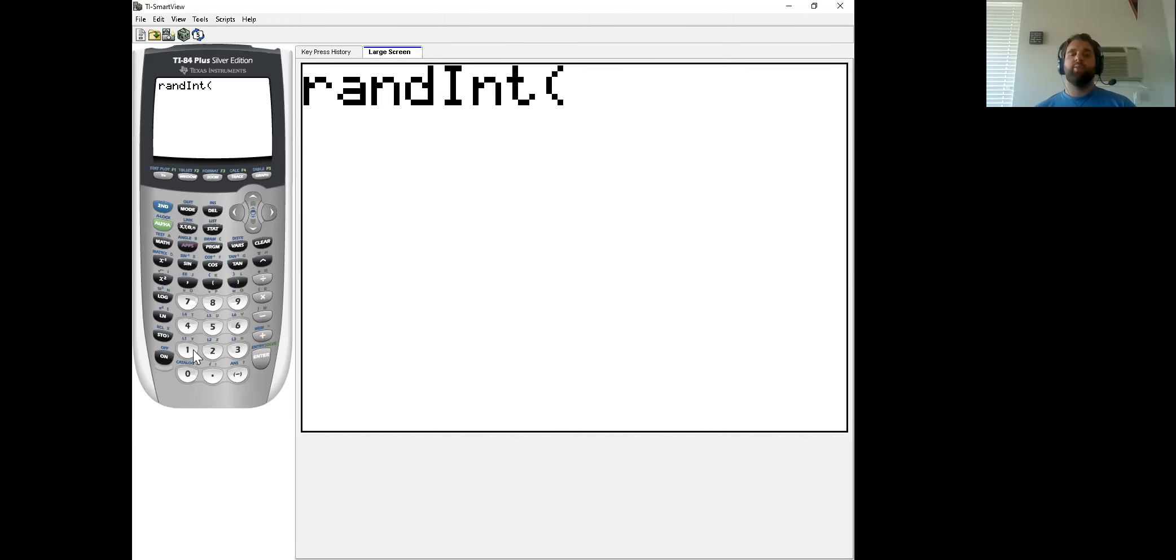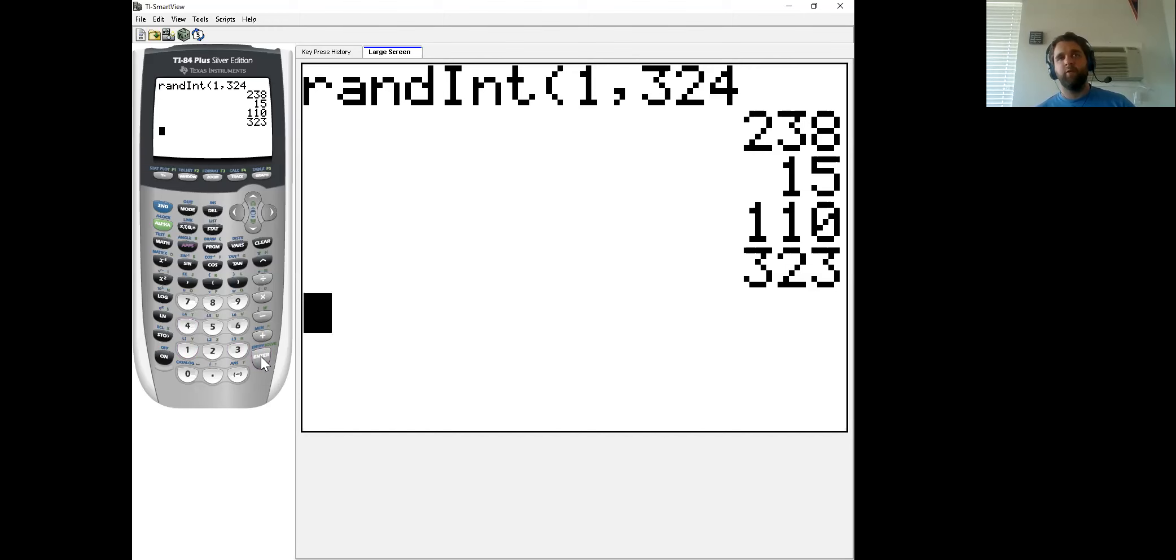So our numbers, if we numbered all of our people, it would be from one to 324. So we'll tell the calculator that. We'll do one comma 324. And then hit enter. It will give you a random number from one to 324. And if you want to do this again to get a second person, you can hit enter again. And then enter a third time, and a fourth time, and a fifth time. And eventually, if you do this enough, you will come up with all 40 people that we need.